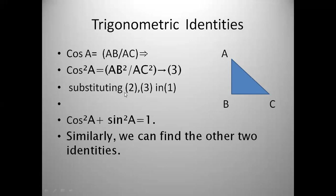Now substitute equation two and equation three in equation one. In place of BC²/AC², write sin²A, and in place of AB²/AC², write cos²A. The right-hand side, AC²/AC², equals 1. Finally, we get cos²A plus sin²A is equal to 1. Similarly, we can find the other two identities the same way. You can refer to the textbook.